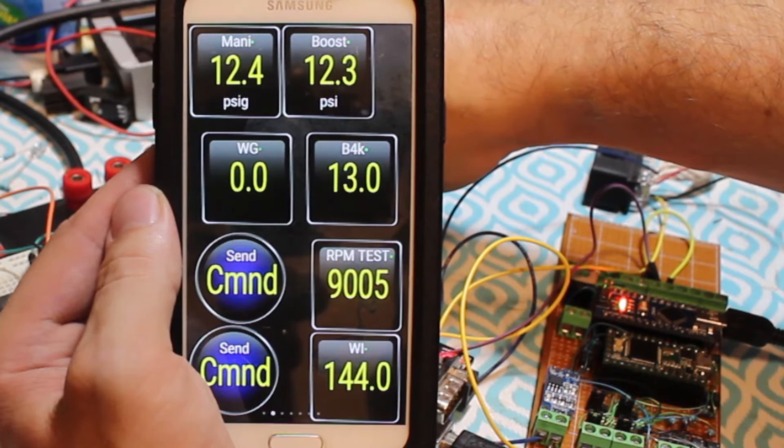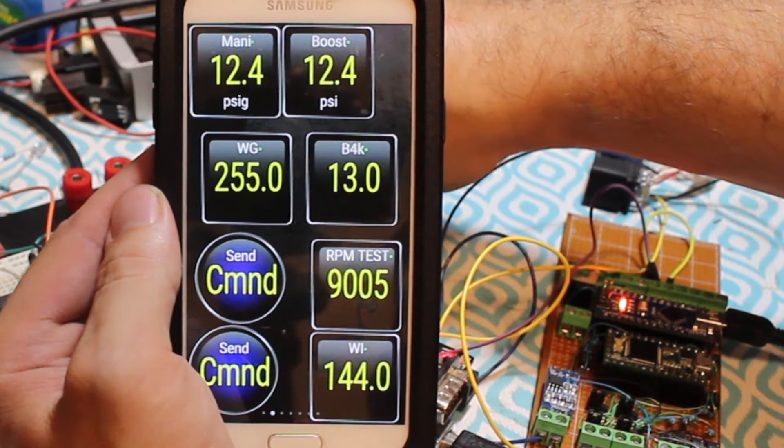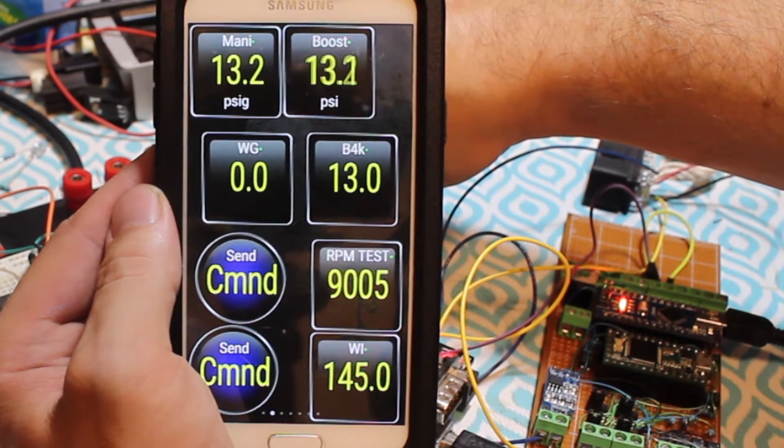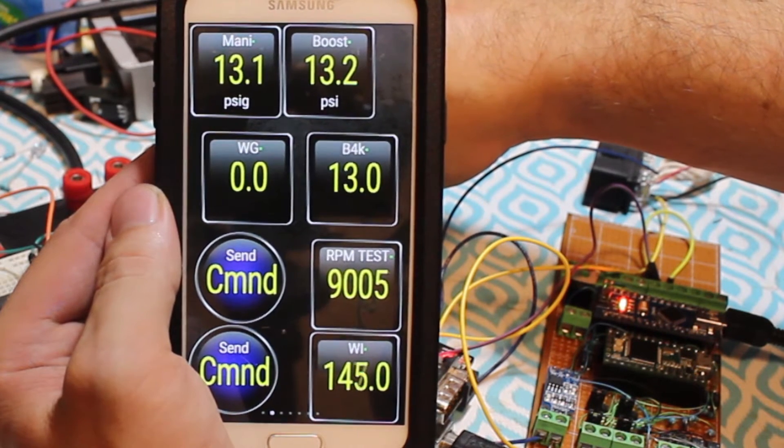Also, the water injection rate is set using a speed density calculation. It's set for approximately 25% water to fuel, and the calculation still needs a little work, but the concept is solid.